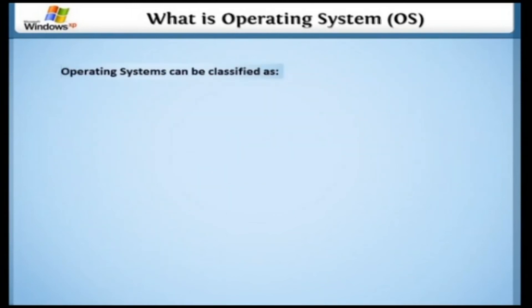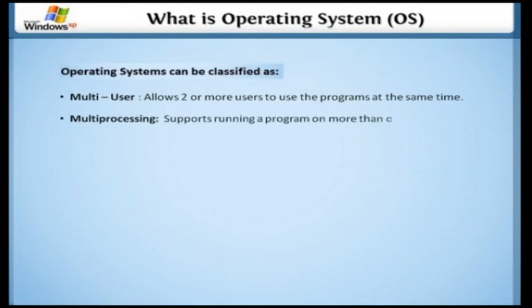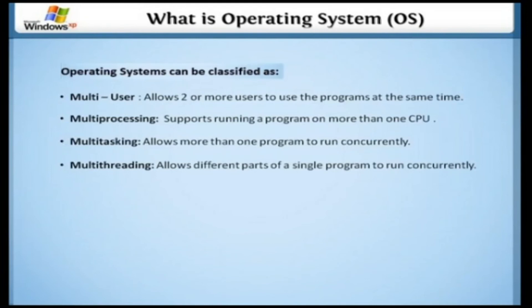Operating systems can be classified as: multi-user, which allows two or more users to run programs at the same time — some operating systems permit hundreds or even thousands of concurrent users; multi-processing, which supports running a program on more than one CPU; multi-tasking, which allows more than one program to run concurrently; multi-threading, which allows different parts of a single program to run concurrently; and real-time, which responds to input instantly. General-purpose operating systems such as DOS and UNIX are not real-time.